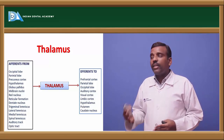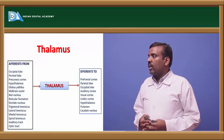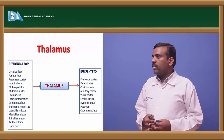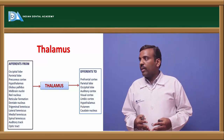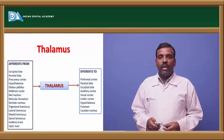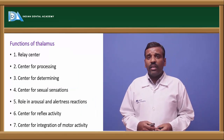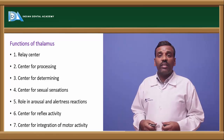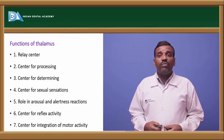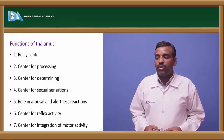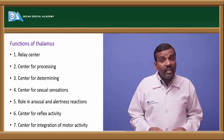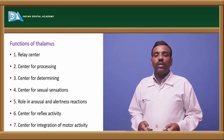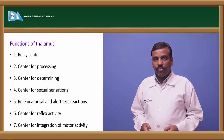From the thalamus, efferent connections go to the prefrontal cortex, parietal lobe, occipital lobe, auditory cortex, visual cortex, limbic cortex, hypothalamus, putamen, and caudate nucleus. The functions of the thalamus include: relay center, center for processing signals, center for determination and quality of signaling, role in sexual sensation, role in arousal and alertness, and center for integration of motor activity.